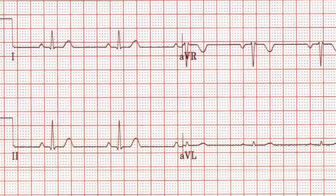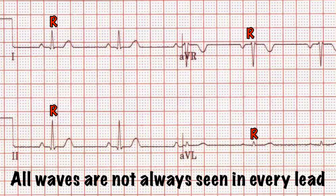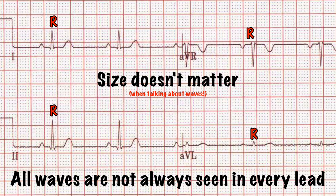Upward deflections on the ECG are termed R waves. The first downward deflection before an R wave is termed the Q wave. The first downward deflection after an R wave is termed the S wave.